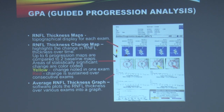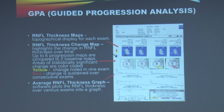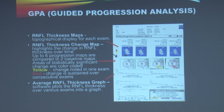Once glaucoma is diagnosed, since it is a chronic progressive disease, we need to monitor progression using guided progression analysis on OCT. The system requires two baseline examinations — on the third examination, changes seen in only one exam appear yellow (borderline), while sustained defects appearing in subsequent scans are shown in red, indicating definite progression requiring management change.